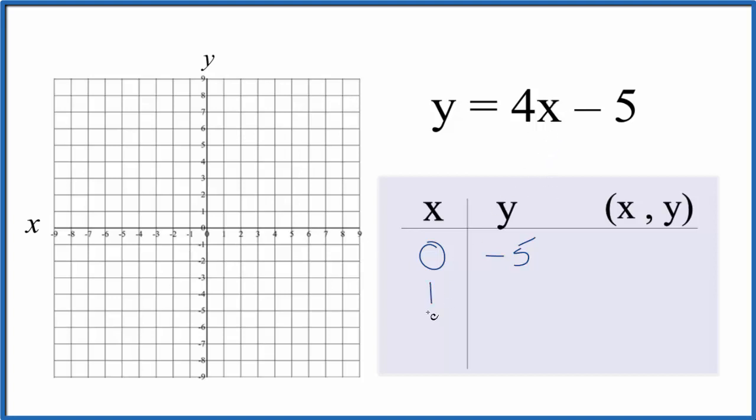choose 1 for x. If we have 4 times 1, that's 4. 4 minus 5 gives us -1. Last point, let's do 2. Since 4 times 2 is 8, 8 minus 5 is 3. These are